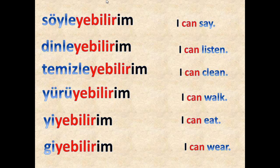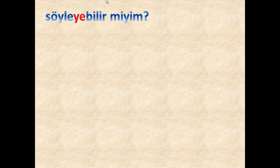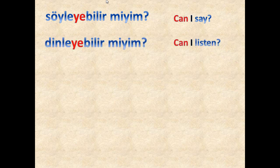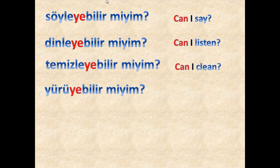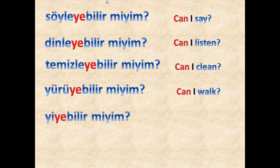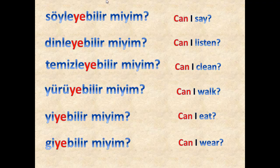As I said, in any part you can change 'can' to 'may' — just by changing the tone of your voice and giving some attitude, the meaning may change to 'can', 'may', or 'is able to'. The question form: 'Söyleyebilir miyim?' — can I say? 'Dinleyebilir miyim?' — can I listen or may I listen? 'Temizleyebilir miyim?' — can I clean? 'Yürüyebilir miyim?' — can I walk? 'Yiyebilir miyim?' — can I eat? 'Giyebilir miyim?' — can I wear?